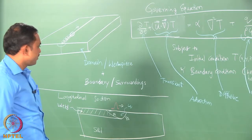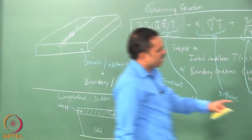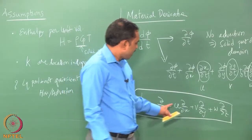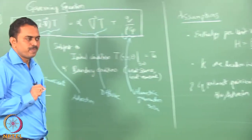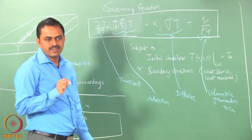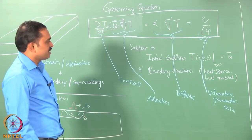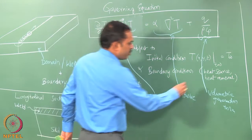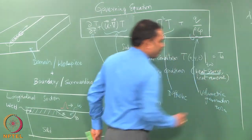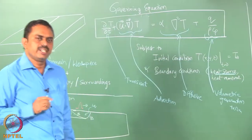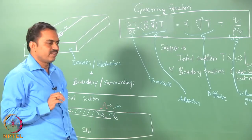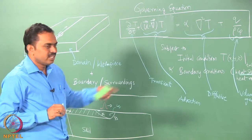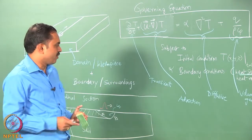One might ask: is the torch velocity the V in this equation? No — it is very important to know that u, v, w are the x, y, z components of the velocity of the liquid pool and are not related to the velocity of the torch. The torch velocity is embedded in the heat source description itself: the origin of the heat source moves with respect to time, and that is where the torch velocity appears. That is why torch velocity does not appear explicitly in the governing equation.